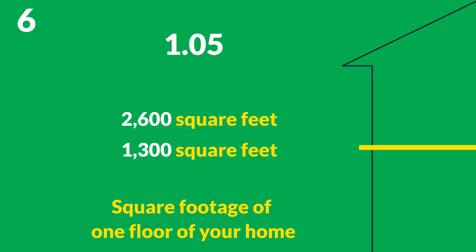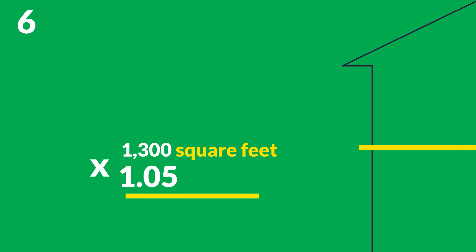Number 6: Multiply this number by your most recent result to get the estimated square footage of your roof. 1,300 times 1.05 equals 1,365 square feet.